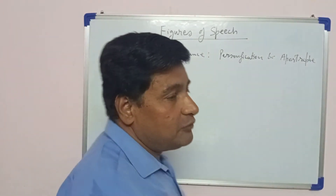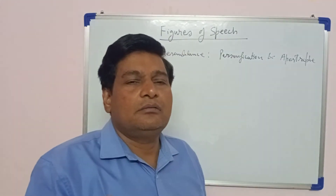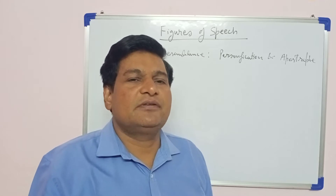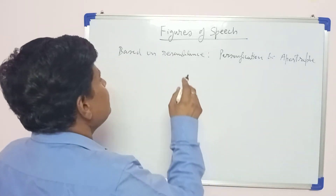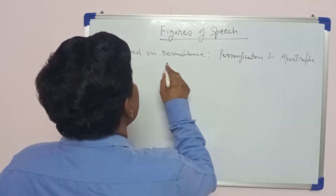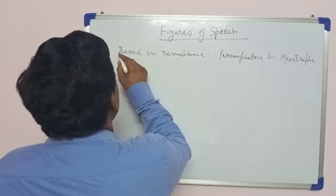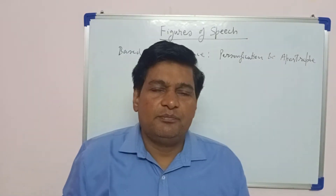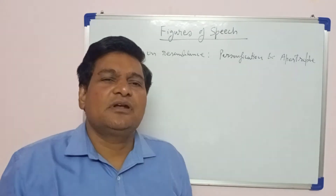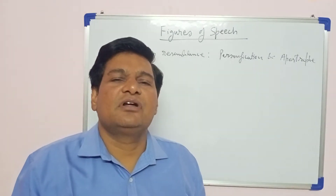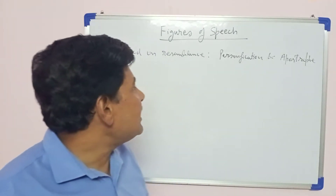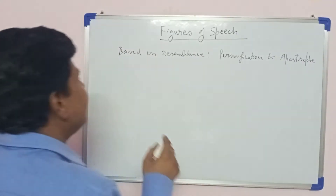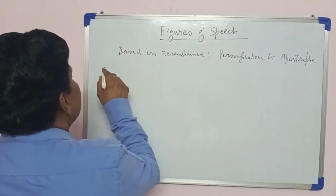Before we proceed further, you must recall what was covered in the previous class. Some figures of speech are based on resemblance, some on association, some on contrast, and some on construction. We are now understanding the next two figures of speech in line, starting with personification.